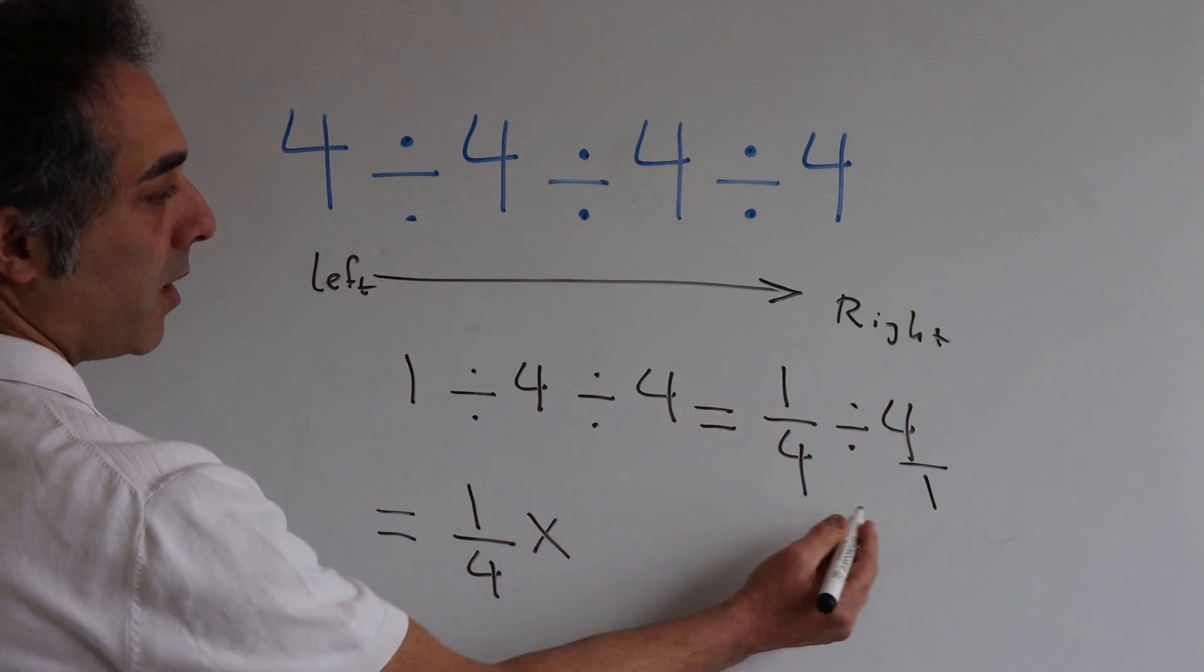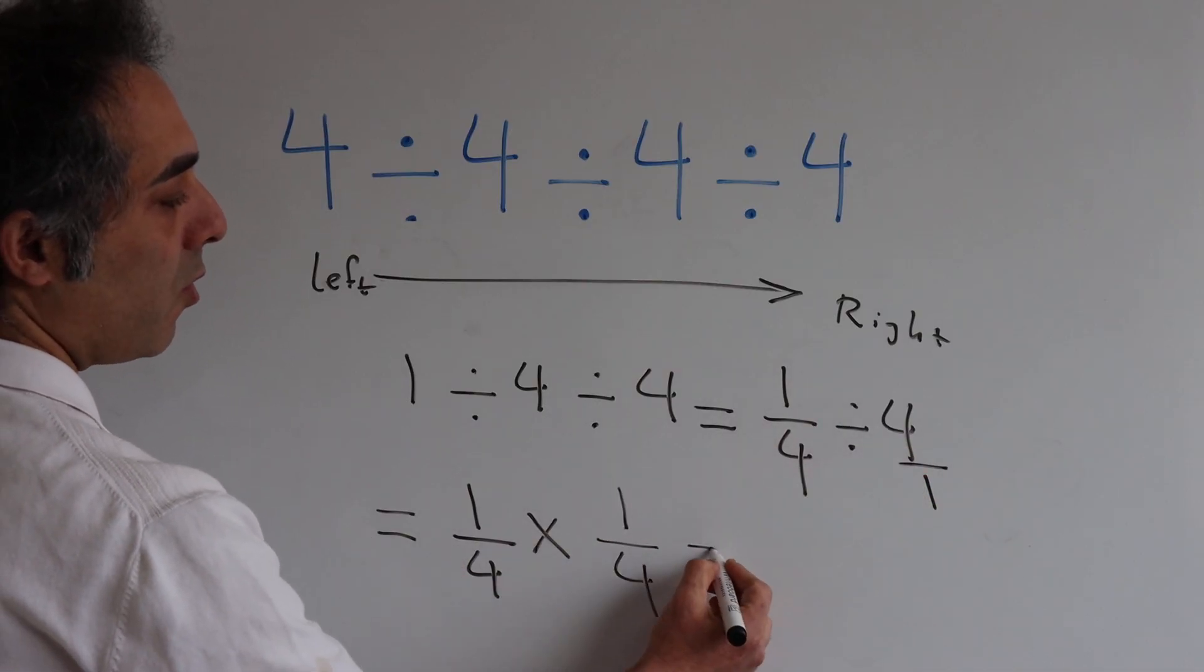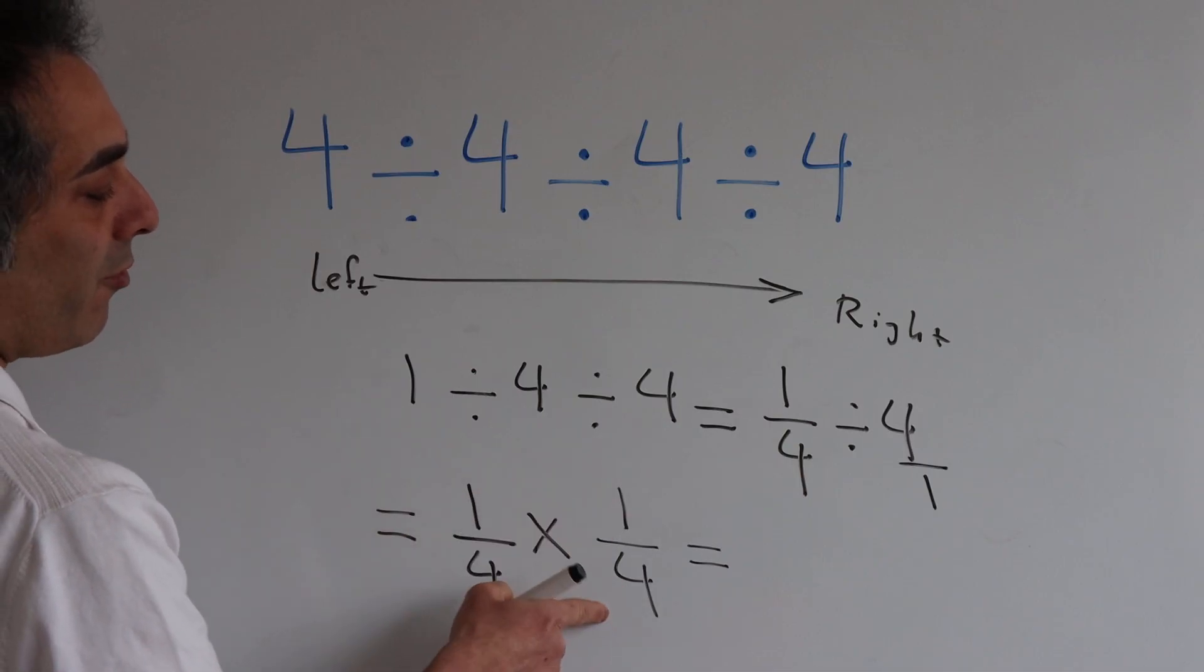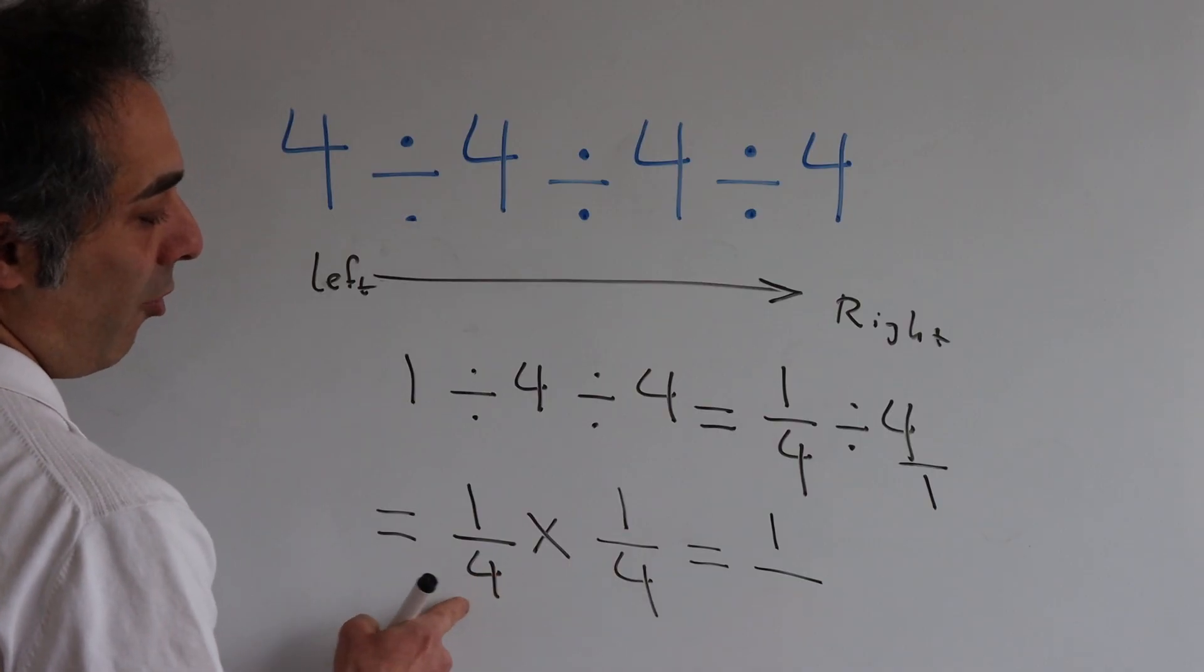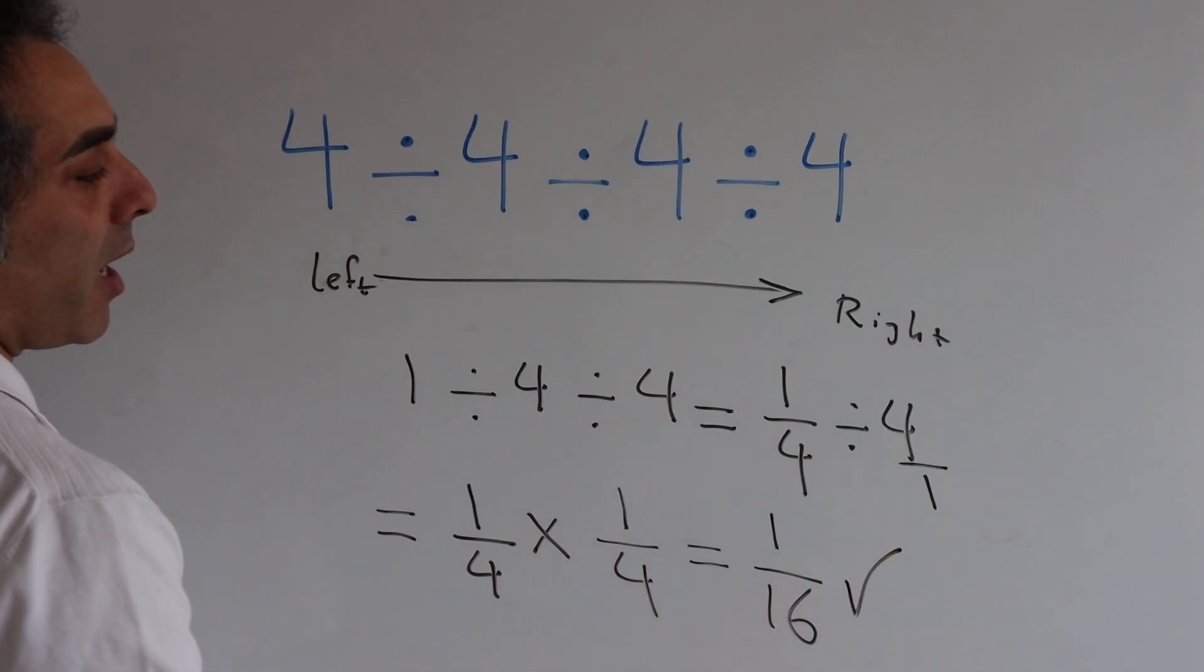Inversion of 4 over 1 is 1 over 4. So by multiplying 1 over 4 and 1 over 4, 1 times 1 is 1, 4 times 4 is 16. And this is the right answer.